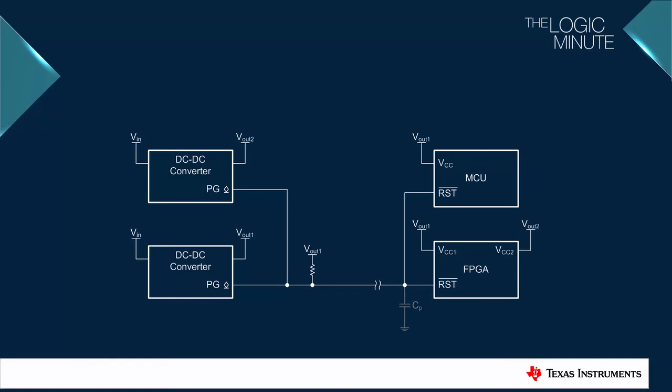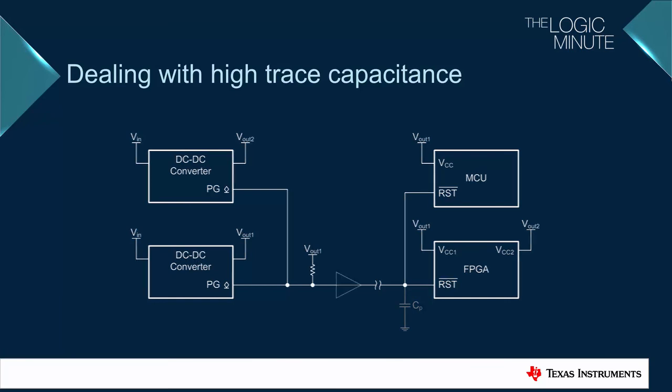In most real systems, it's a combination of these two issues that results in the need for a solution to this problem. If the converters are close enough together in the power supply, their outputs can be combined as previously discussed, then put through a buffer to increase the drive strength.